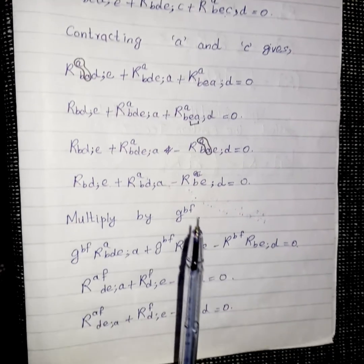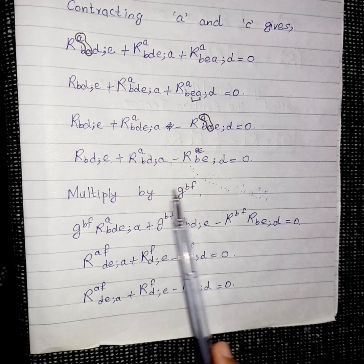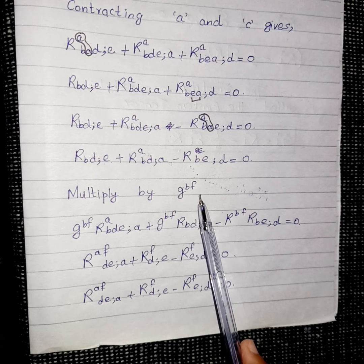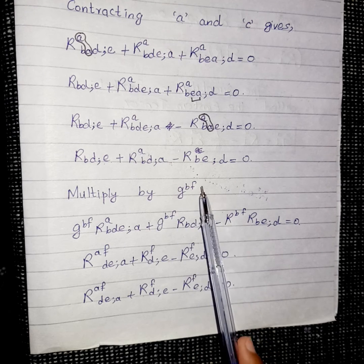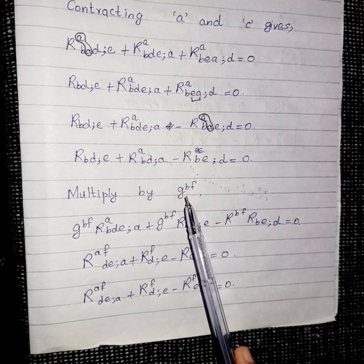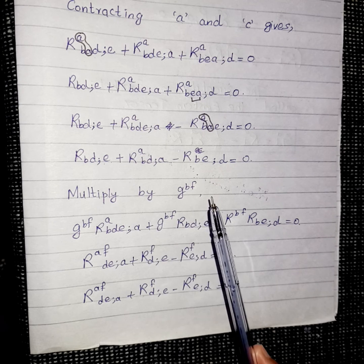I am going to multiply this equation by g^bf that is a metric tensor and the main purpose of using it here is to raise the indices because we know that a metric tensor can lower or raise the indices.